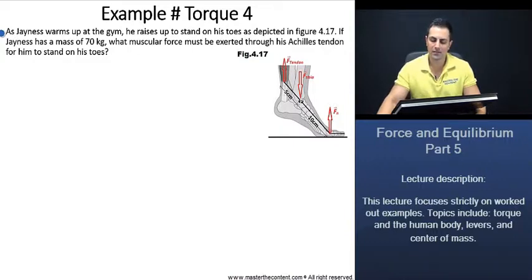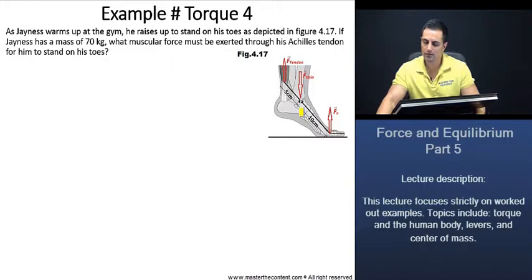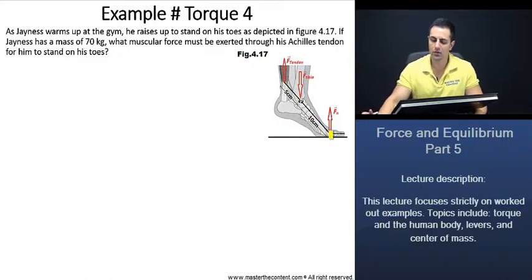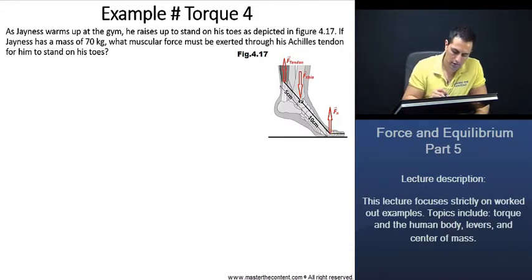Because he's going to be standing on his toes, this is going to be an equilibrium problem. Because it's an equilibrium problem, we know that net force and net torque is going to be zero. We see that this downward force, force tibia, is right at the pivot point, so this is going to have net torque of zero. Thus, to find that muscular force through the tendon, we can just isolate for force tendon from force normal using the net torque equation. Let's write down our net torque equation.